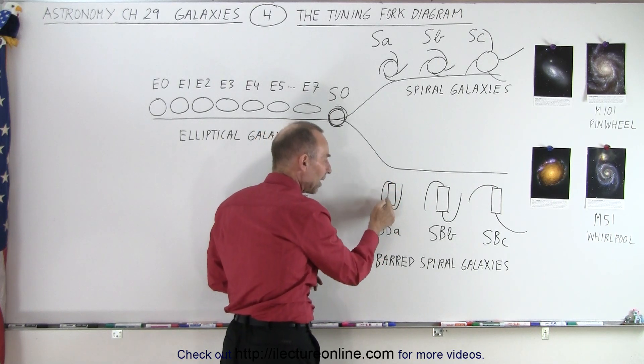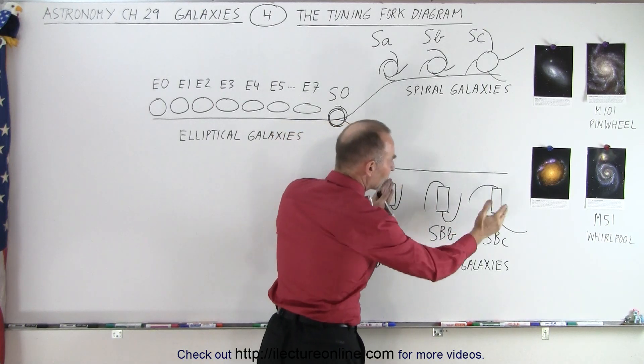Also notice with a barred spiral galaxy the arms tend to come out of the far end of each of the edges of the rectangles. You can see they're farther and farther out like this.